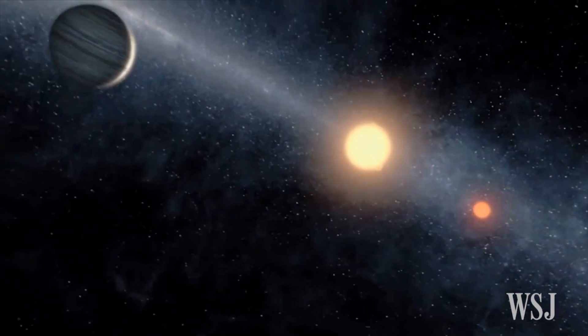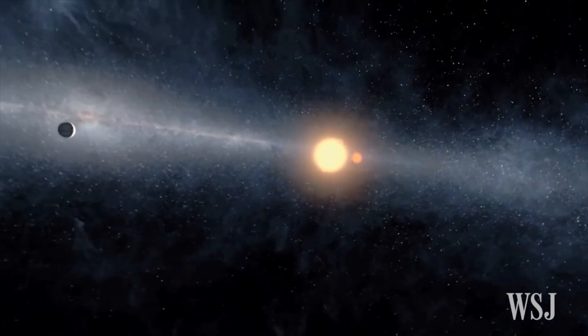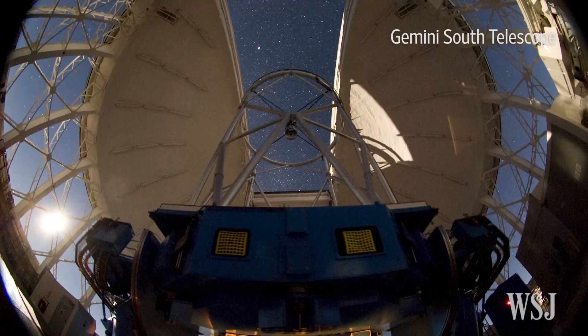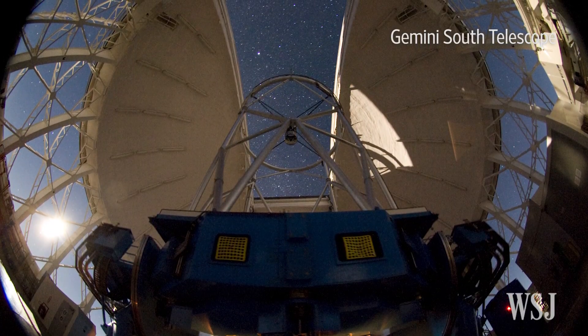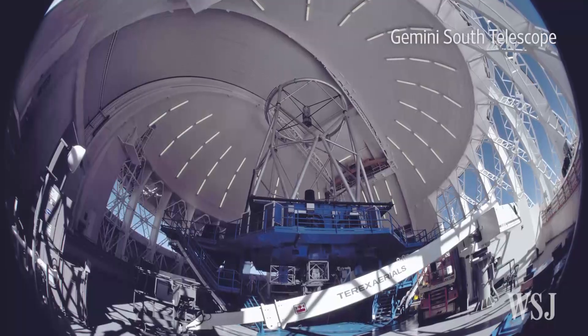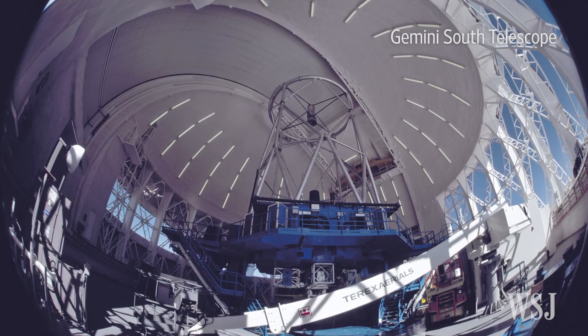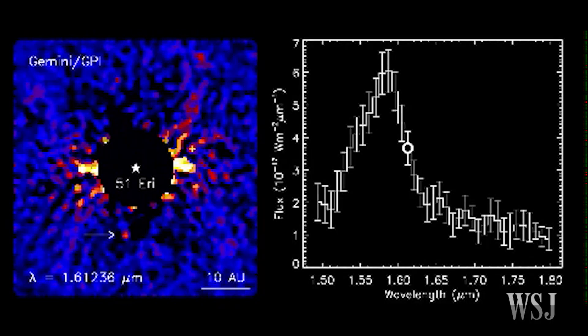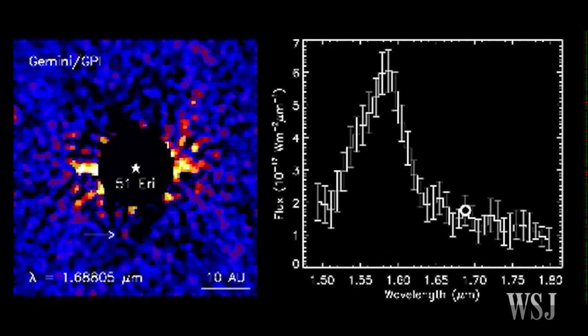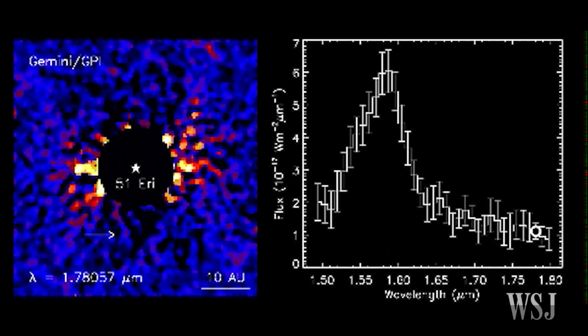It's the first time an exoplanet, a planet which orbits a star outside the solar system, was discovered using the new Gemini Planet instrument, an international collaboration headed by Stanford University. The GPI is an imager installed in a telescope to analyze faint young planets orbiting bright stars.